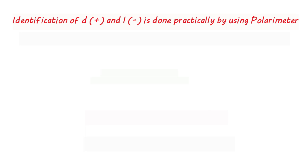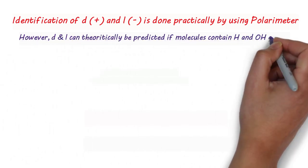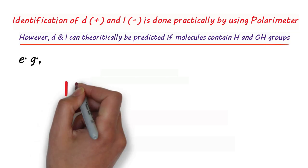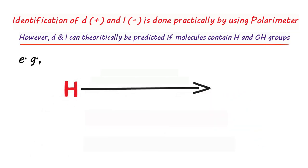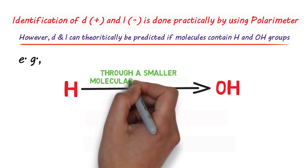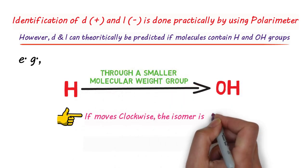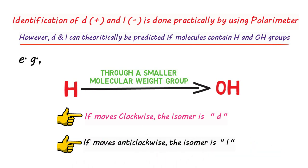For identification of D and L we have an instrument called a polarimeter. Practically we can determine it using a polarimeter, but there is also a theoretical way of predicting D and L, provided the molecule contains hydrogen and hydroxyl groups. When you move from hydrogen to the hydroxyl group through the smaller molecular weight group, if it moves clockwise it is the D isomer, and if it moves anti-clockwise it is the L isomer.